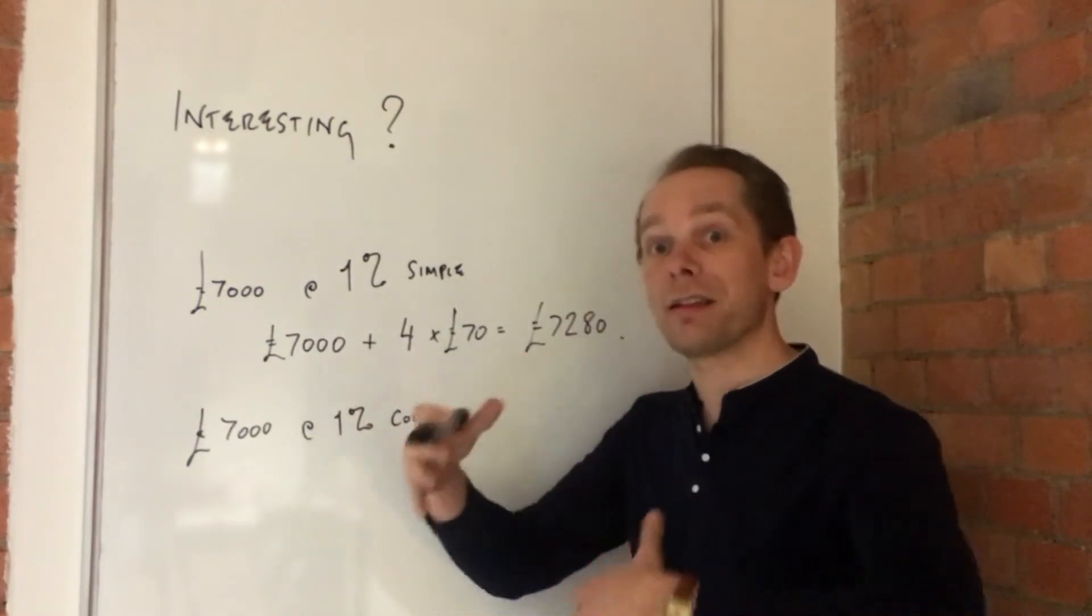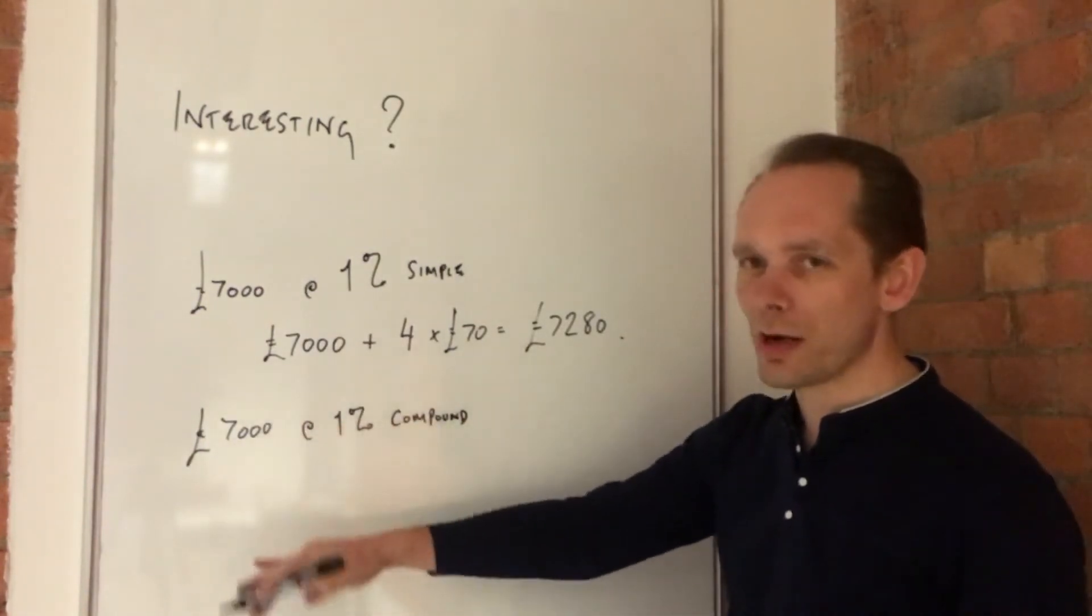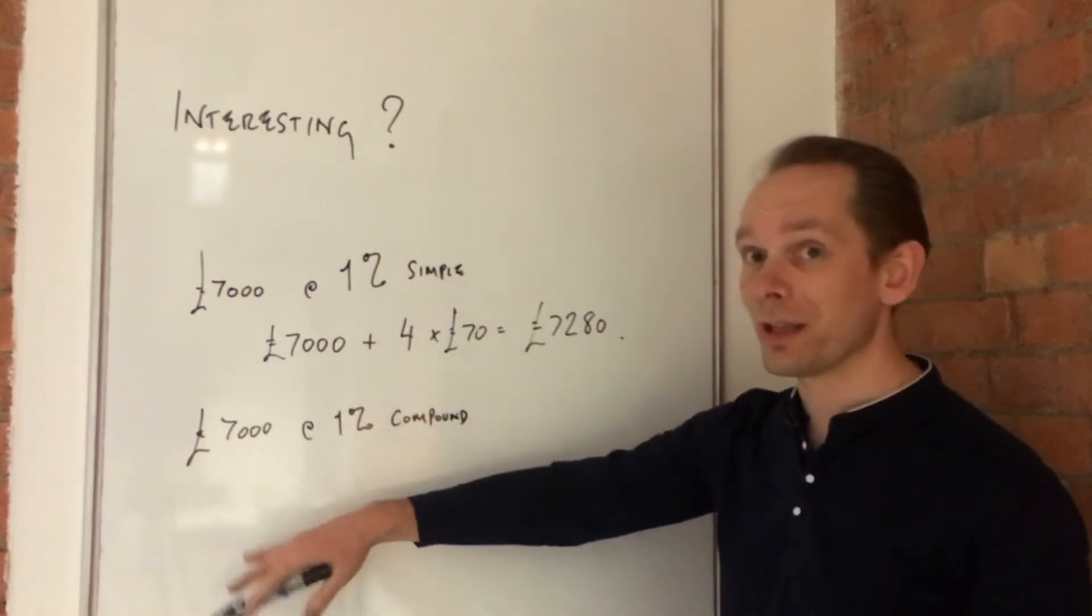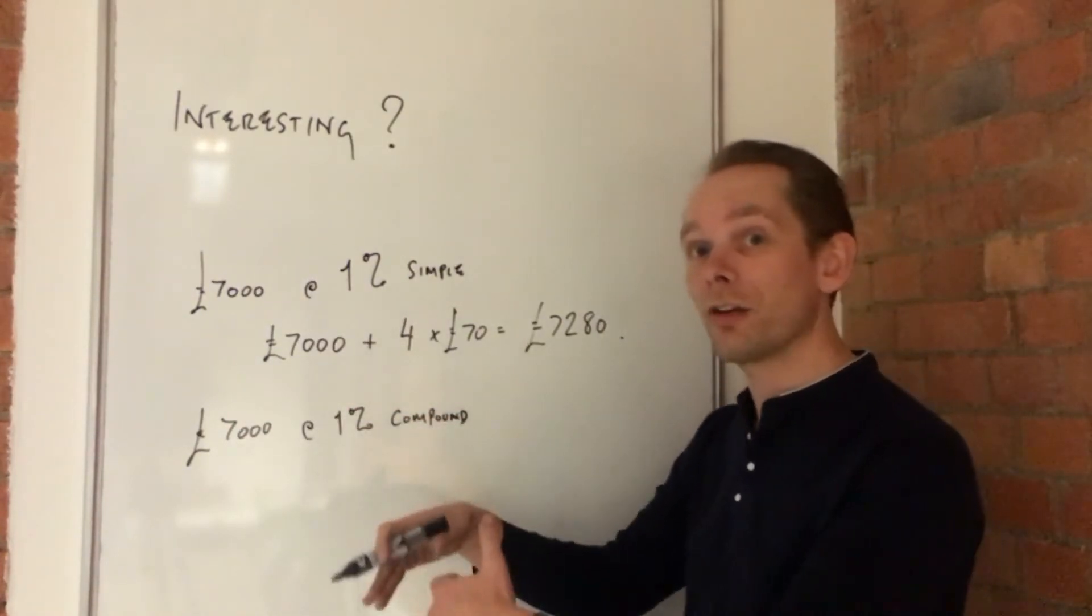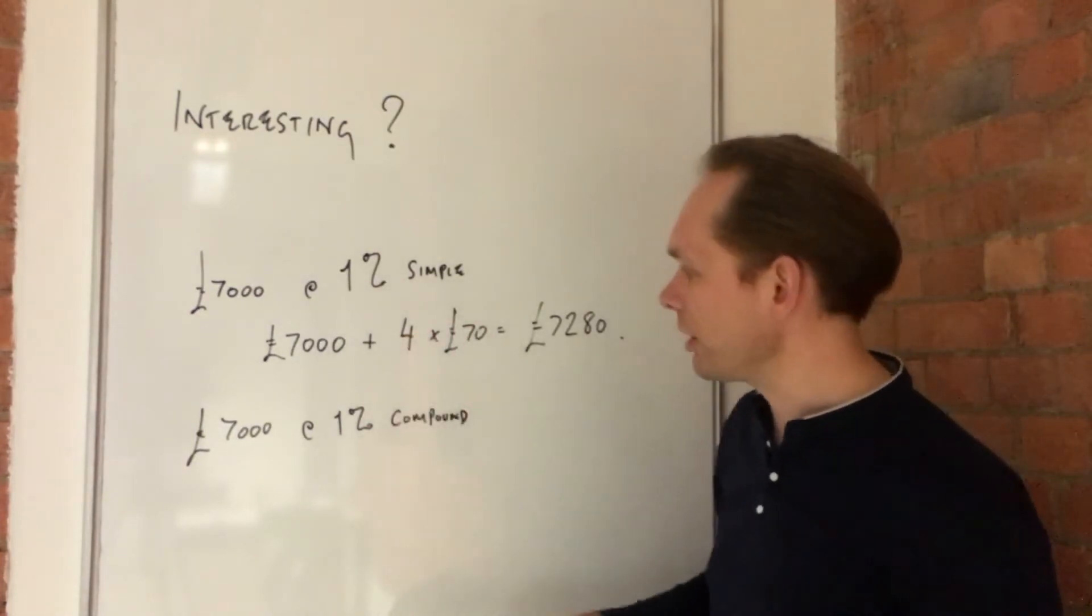So it starts to compound, it starts to get bigger each time. Now, I could work out the sort of stages and show you. The first year is the same, £70, but the next year it becomes adding on £70 and £70 rather than just the original £70. And the amount increases each time.